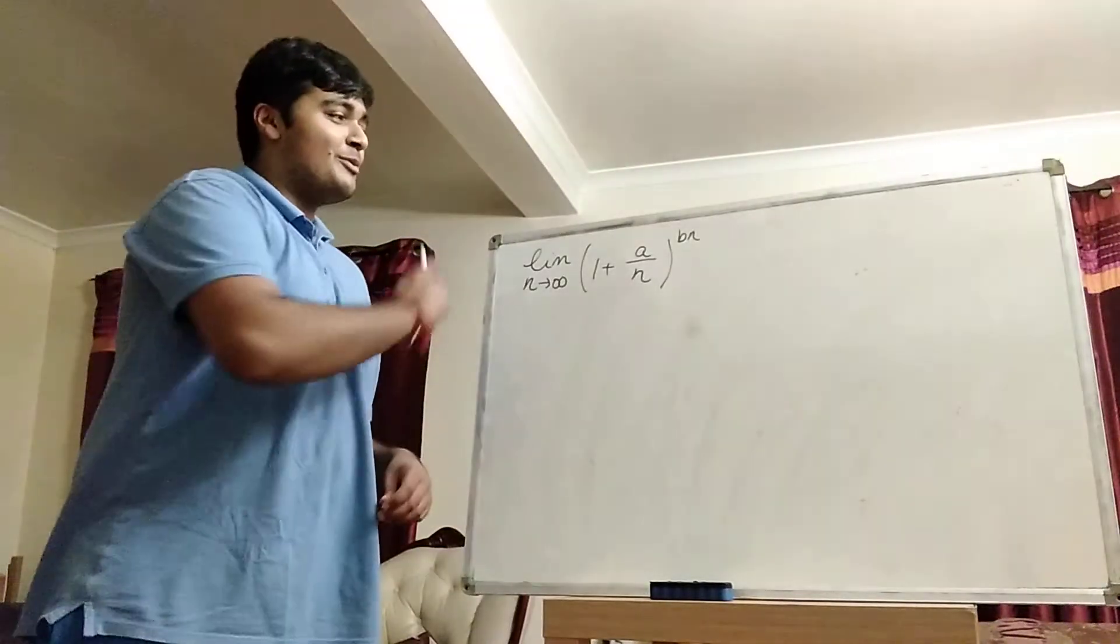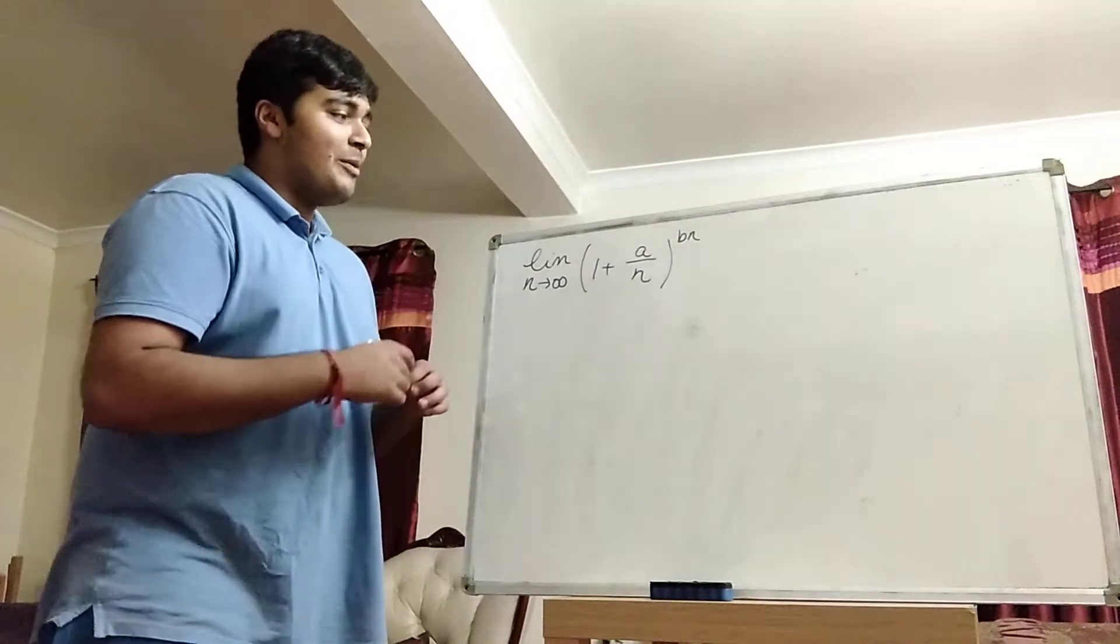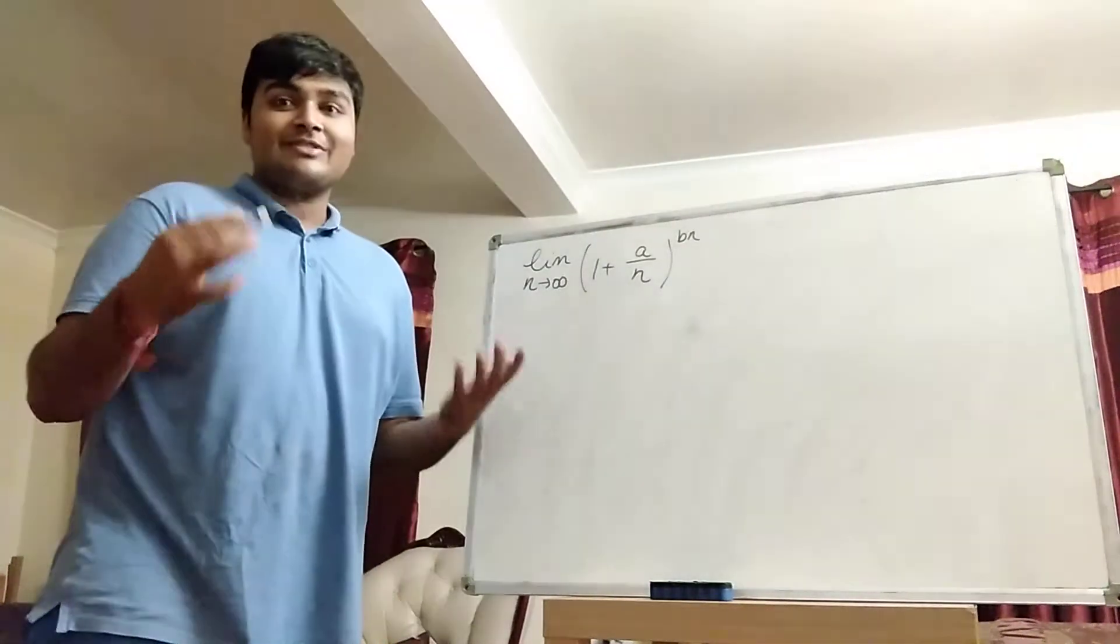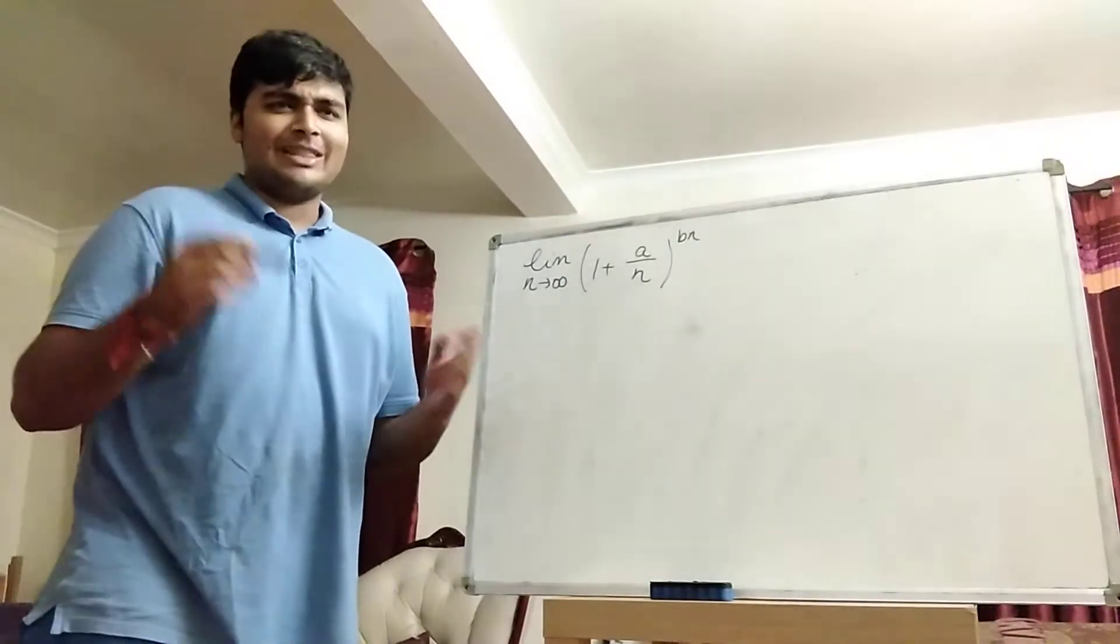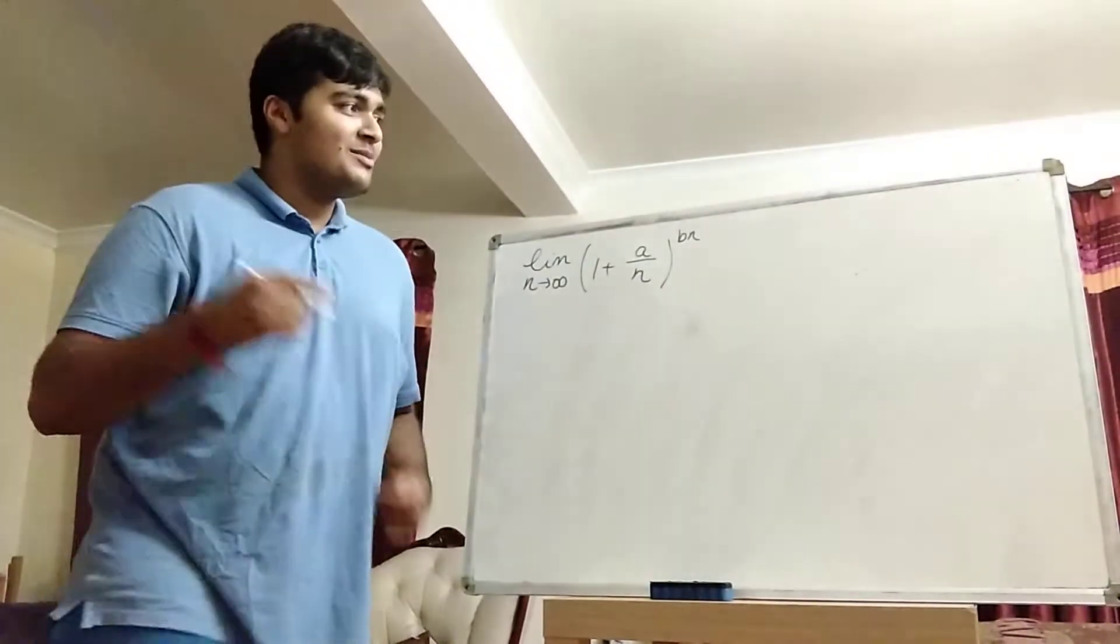Hi, thanks for joining me. Today I'm going to be proving a very standard result. It's the limit as n goes to infinity of 1 plus a over n to the power of bn. This uses a very important and useful trick called L'Hopital's rule. So if you don't know what that is, it's a really cool trick and it can help solve a lot of limit problems.